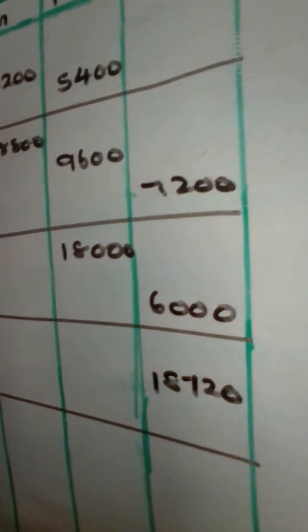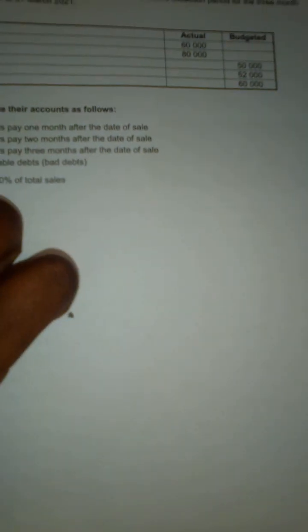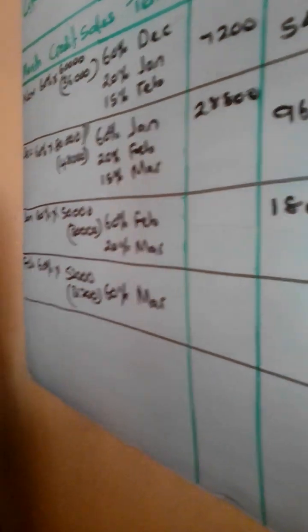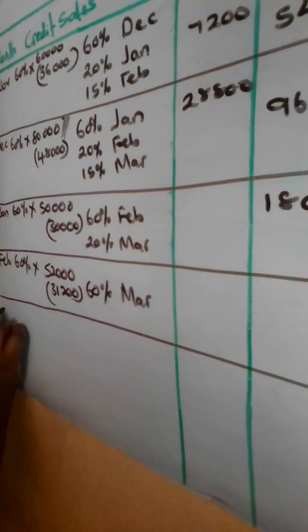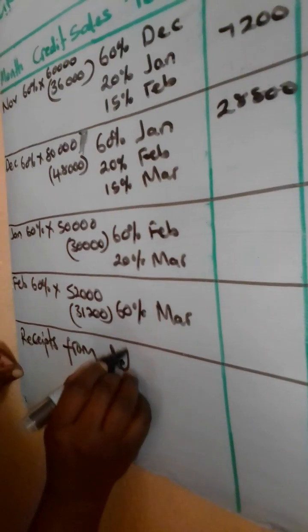For March: one month from March is April, so there is nothing from March's credit sales that we collect within our budget period. Since our collection terms start one month after the date of sale, and one month after March falls in April, there is no need to include March's credit sales in the schedule.